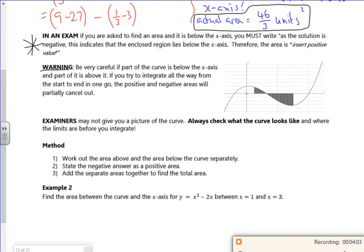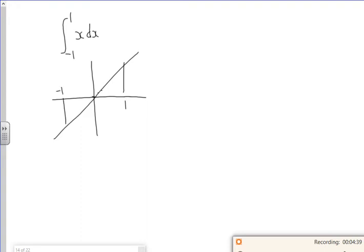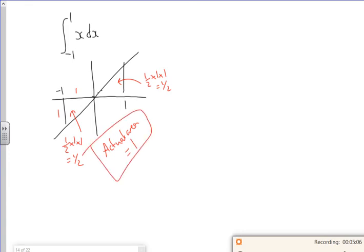Then it says warning: be very careful if part of the curve is below the x-axis. Let me do a quick example. I want to do the integral minus one to one of x dx. So in terms of a picture, it's going from one to minus one. Physically the area, that's one, one, in terms of that, so that's like half of one times one, so that's a half. Physically the same here, so it's a half of base times height, so that's a half. So the actual area is one.